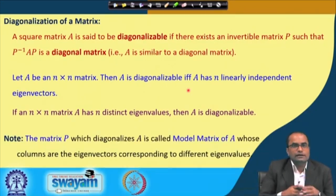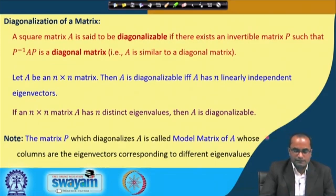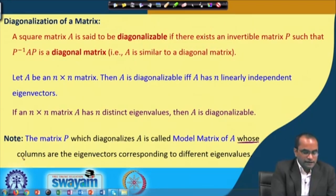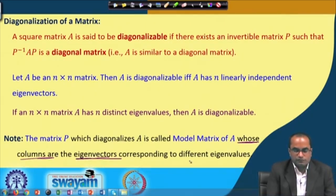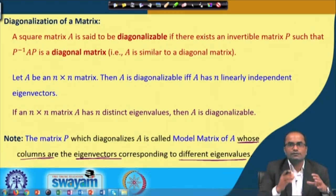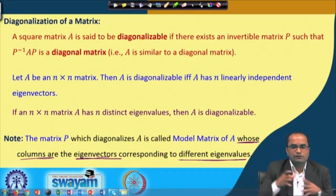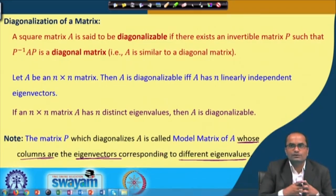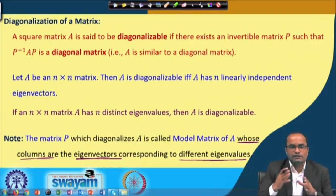A note: the matrix P that diagonalizes A is called the modal matrix of A. Its columns are nothing but the eigenvectors corresponding to the different eigenvalues. If we place n linearly independent eigenvectors as columns of P, then P⁻¹AP is the diagonal matrix whose entries are the corresponding eigenvalues.